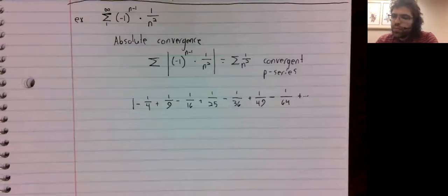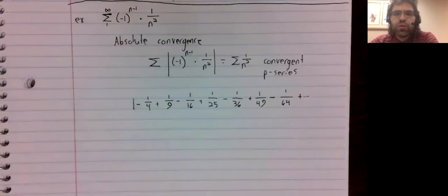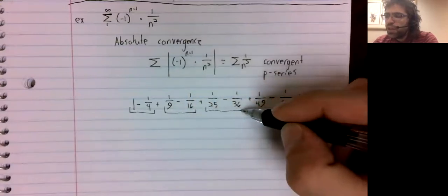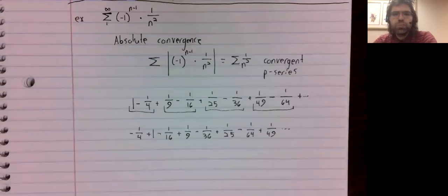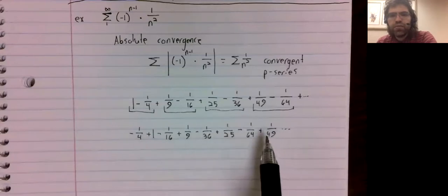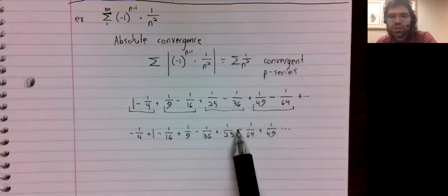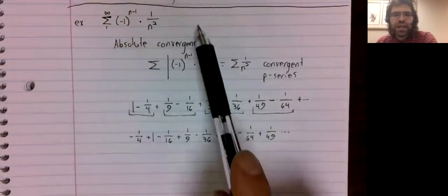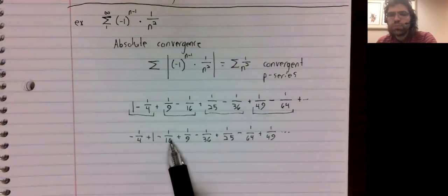Now, a theorem of absolute convergence is that if a series converges absolutely, you can rearrange its terms. So what we're going to do with this series is pair off its terms and swap them. This is a convergent alternating series — that it's alternating you can clearly see. That it converges — well, because this converges absolutely, this converges, and thanks to the absoluteness, when we swap terms around, it doesn't affect convergence.